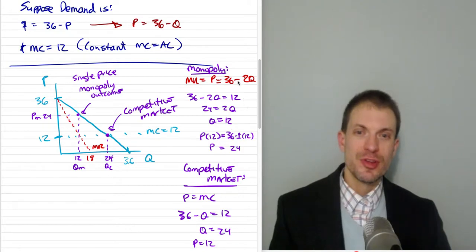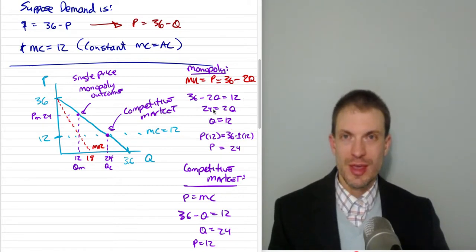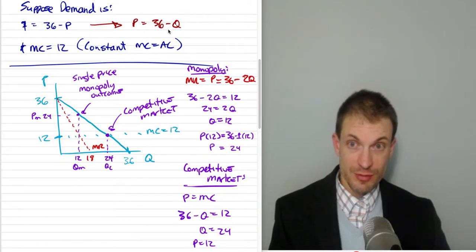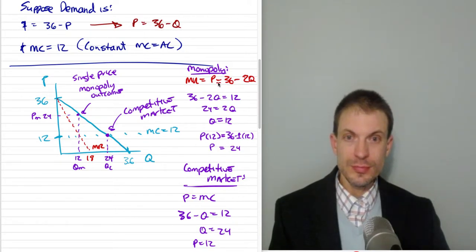Here would be the monopoly solution. This is exactly the same exercise that I did in my third-degree price discrimination video. The monopoly's marginal revenue has the same vertical intercept with twice the slope as my inverse demand. I've got the calculus explanation in that video if you go back and see it.